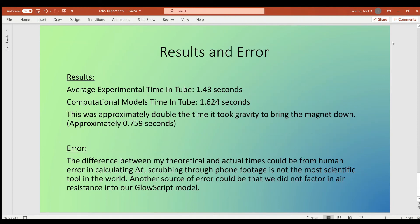And finally, we have our results and error. I said that my average time in the tube was about 1.43 seconds. The computational model was about 1.624. Both of these were about double the time it took gravity to bring the magnet down, which I calculated to be about 0.759 seconds.